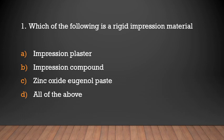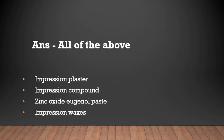Which of the following is a rigid impression material? Options: impression plaster, impression compound, zinc oxide eugenol paste, all of the above. Answer: All of the above. Rigid impression materials include impression plaster, impression compound, zinc oxide eugenol paste, and impression waxes.